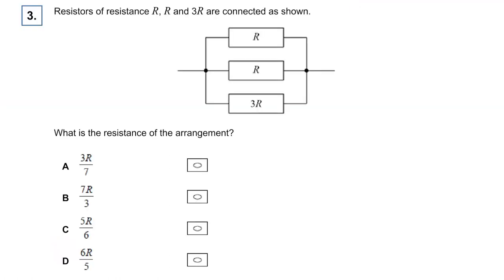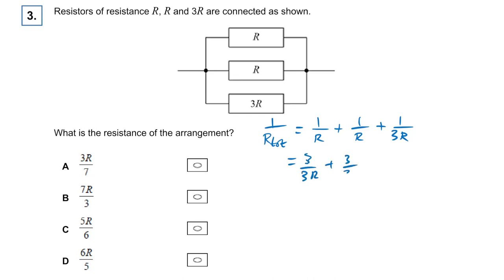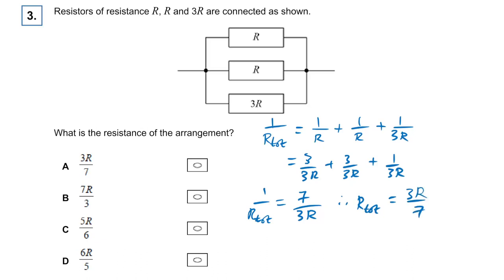Question three: we have resistors R, R, and 3R. What's the resistance of the arrangement? Using one over R total equals one over R plus one over R plus one over 3R, we get a common denominator of 3R: three over 3R plus three over 3R plus one over 3R equals seven over 3R. So R total equals 3R over seven. The answer is A.